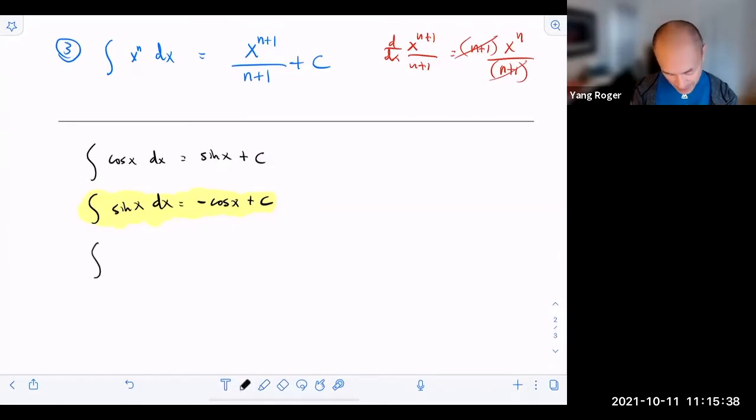The antiderivative of secant squared x dx is tangent of x plus c. The antiderivative of secant x tangent x dx is just secant of x plus c.